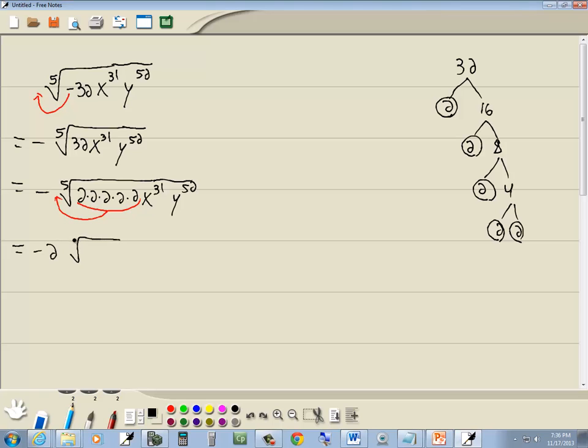So we've got negative 2, the fifth root of x to the 31st, y to the 52nd. Well, let's figure out how many x's we're going to have come out.